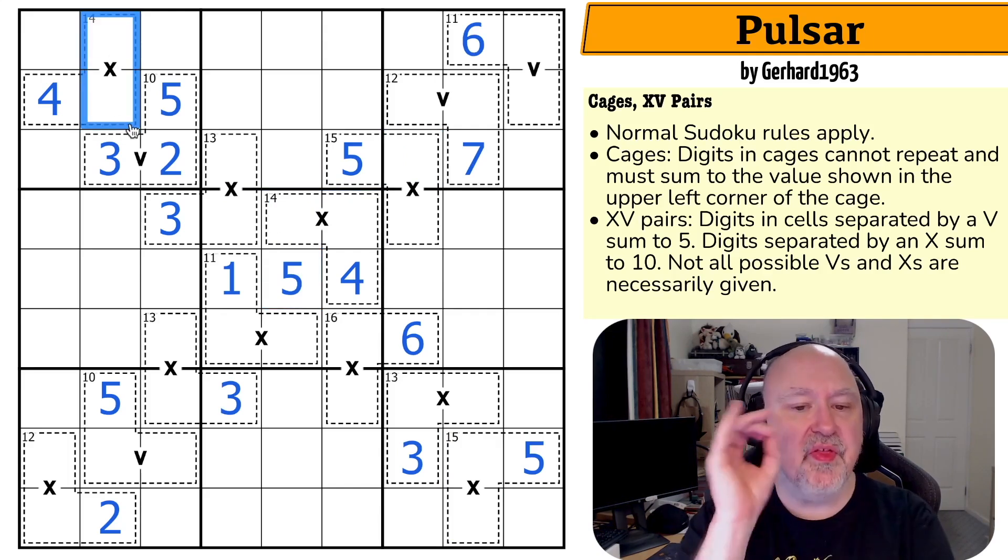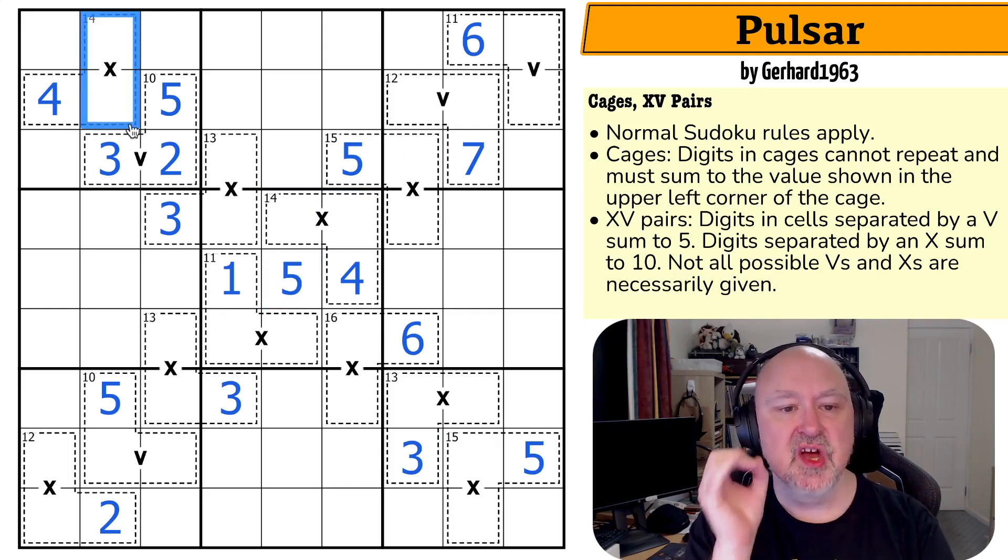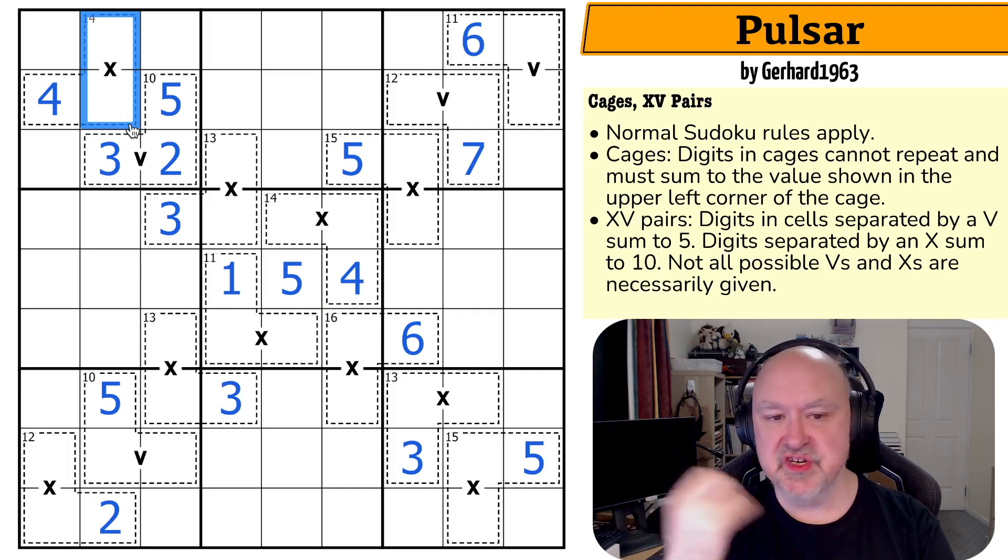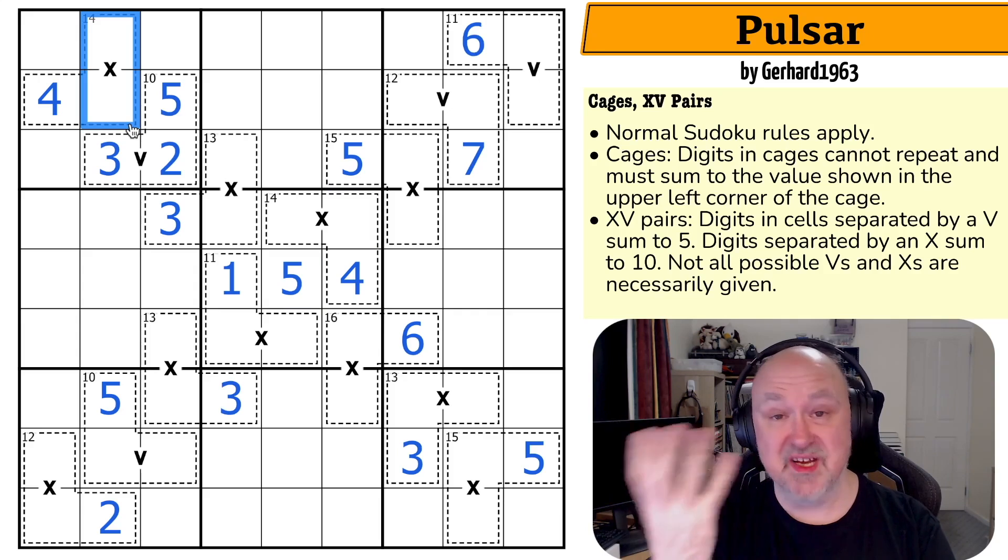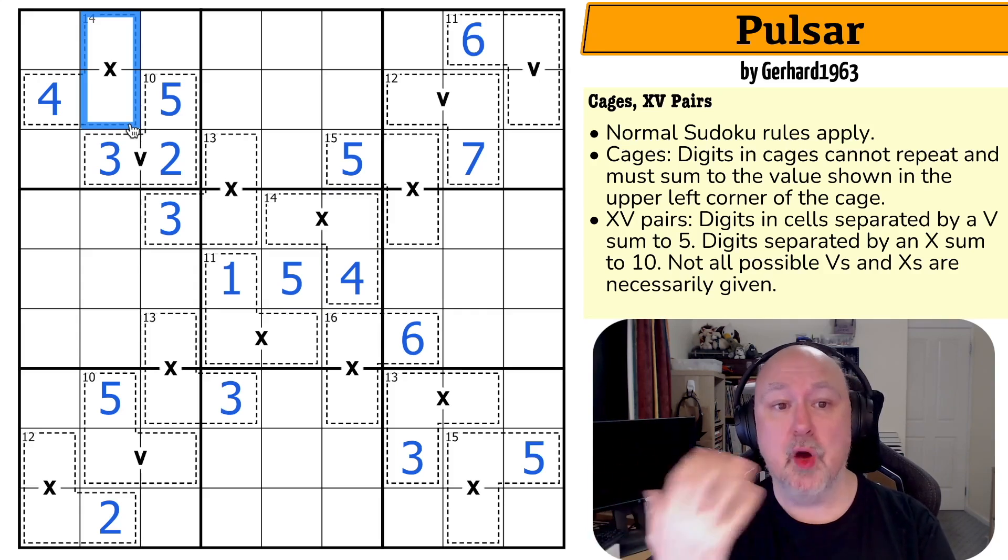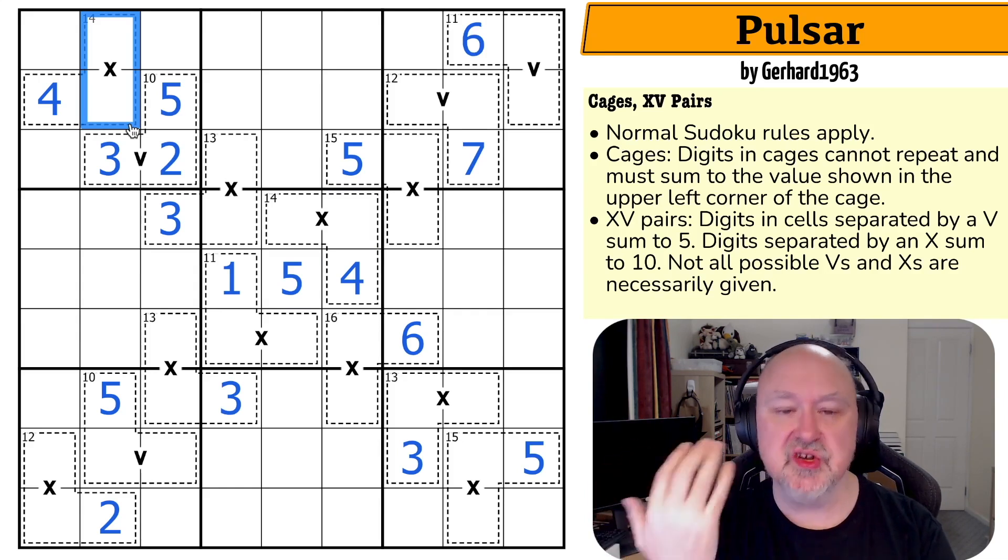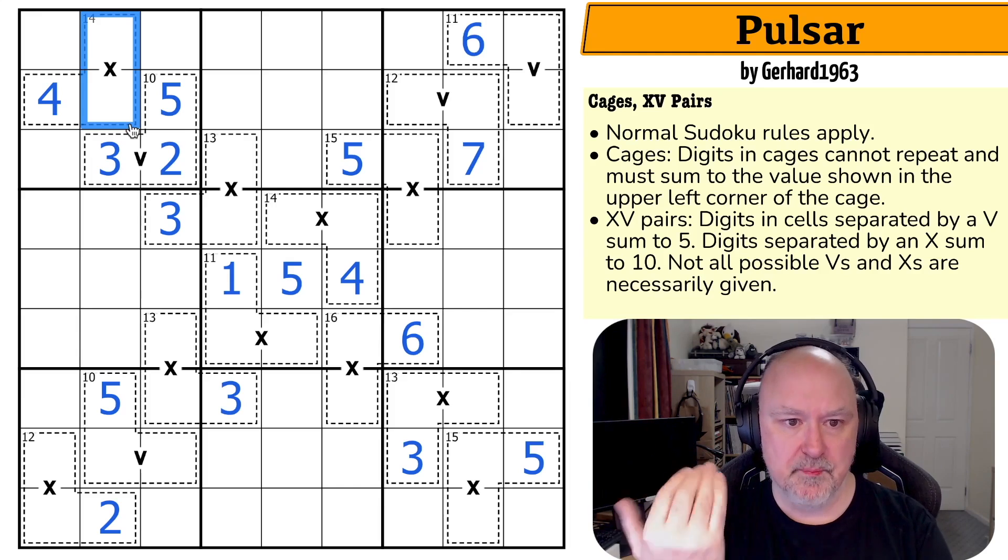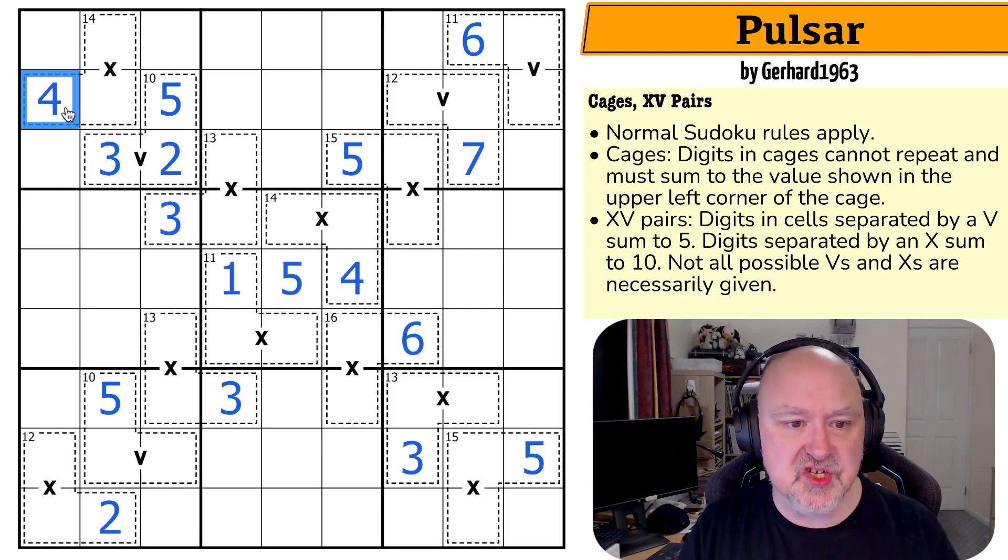But the other thing about an X is you must have one digit below five and one digit above five. Two digits below five, because you can never use a five, the maximum would be three-four, which is seven. And if you only go above five, the minimums would be six and seven, which is 13. So you must have one below five and one above five, but there's only one digit below five available for this X because two, three, and four is gone.